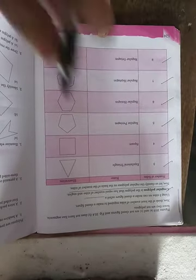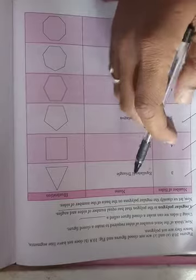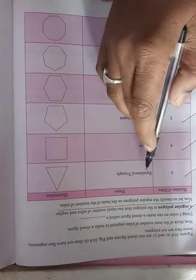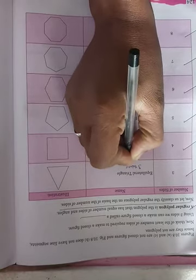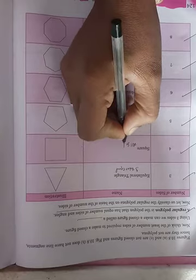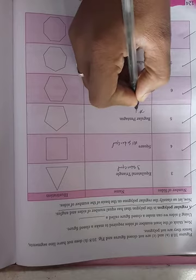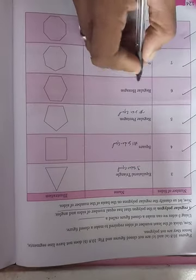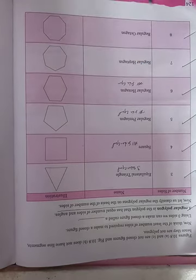Examples of regular polygons: equilateral triangle, number of sides three, three sides equal. Square has all sides equal, regular pentagon has all sides equal, regular hexagon has all sides equal, regular heptagon has all sites equal, and octagon has all sites equal.